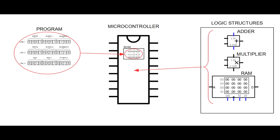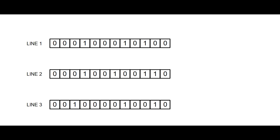A program is stored inside the microcontroller's internal memory and can be transferred into the microcontroller through programming pins specially made for this purpose. You can think about a program as lines of zeros and ones. This won't be an actual program, but it should serve as a good example to better understand how the program is read by the microcontroller.